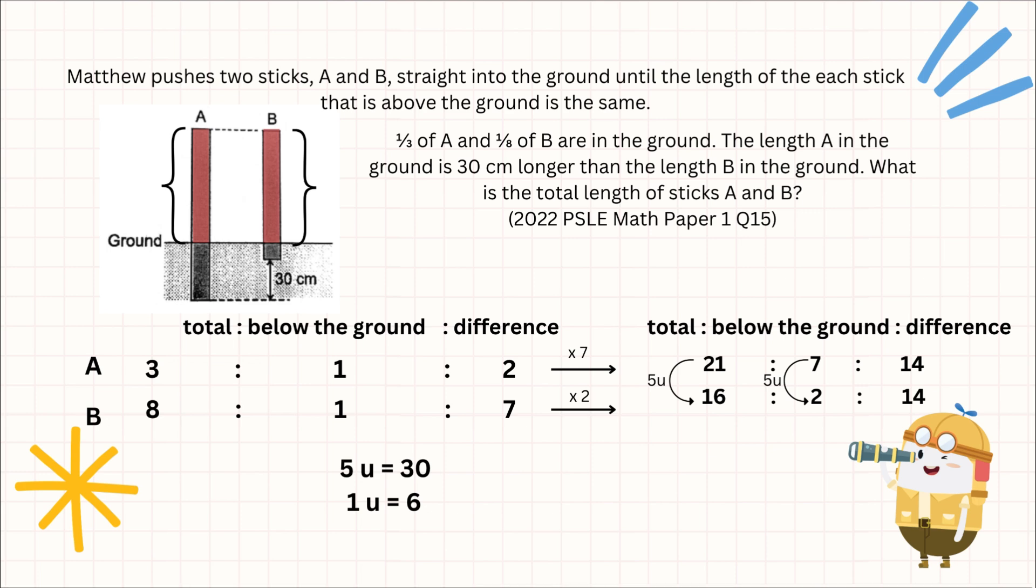Allowing us to find the total length of both stick A and stick B. We base it on the new ratio. Always remember, because we determined the 5 units from the new ratio, we use the new ratios for our future calculations. Total being in this case 21U plus 16 units, which is 37 units. All we need to do is take 37 times 6, and we get 222 cm.